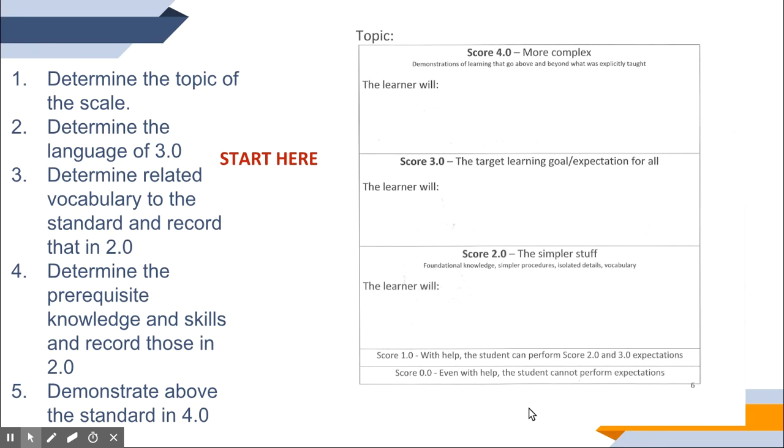Remember, you start with the three and you write the language of the standard. In our case, we're talking about TEKS. Then you're going to consider the two by looking at the prerequisite skills and knowledge, maybe even the vocabulary that's needed. And the level four is all about the extension and enrichment.